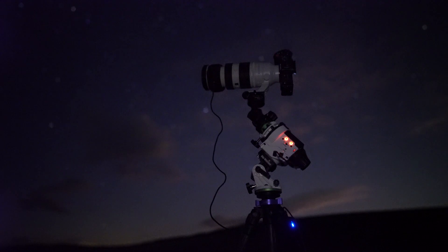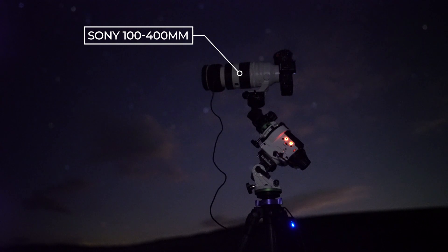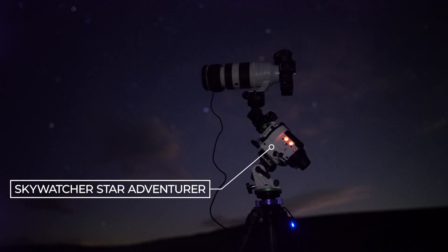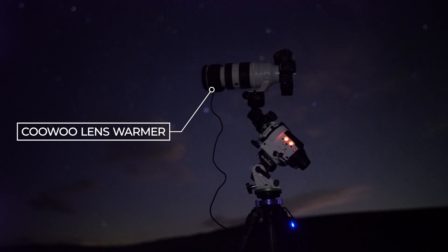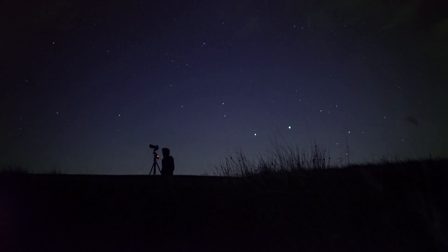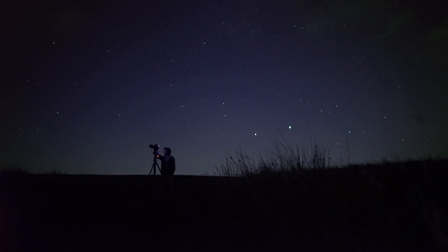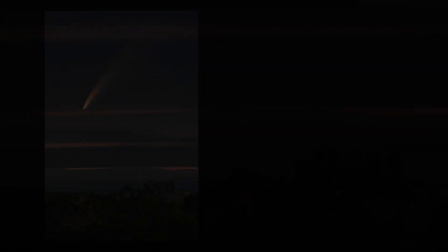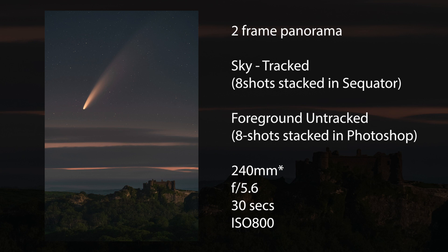My setup for this image was the Sony 100-400mm, which is great because I can zoom out to keep the comet in frame. Because it doesn't have a fast aperture, I was using the Skywatcher Star Adventurer Pro to take 30-second exposures easily. I was also using a lens warmer to keep dew and fog off the front of the lens. I ended up zooming out to 280mm and shot the foreground first. As the comet came into line, I had to move the frame up slightly to get the full tail in, making it a kind of mini panorama of two shots.